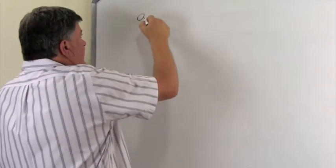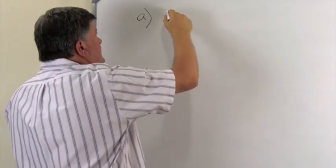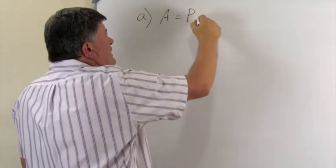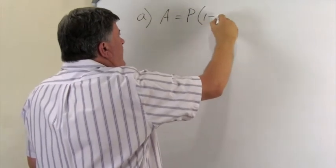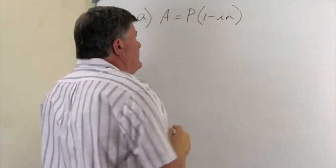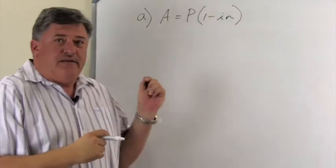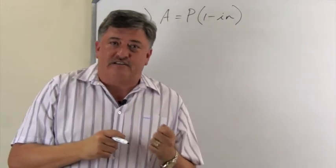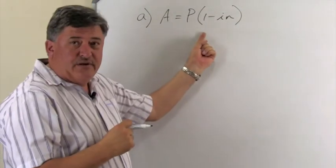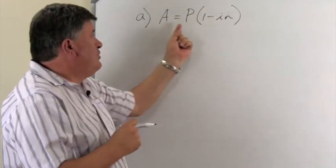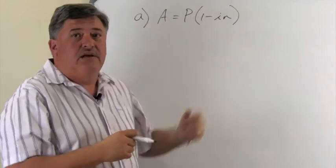The first one, the straight line depreciation. The formula is A equal to P, one minus IN, and you will remember the one for simple interest looked very much the same in grade 10. That was A equal to P, one plus IN.